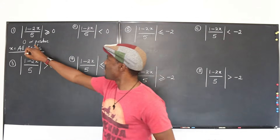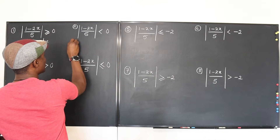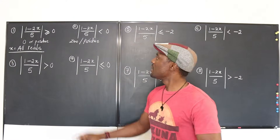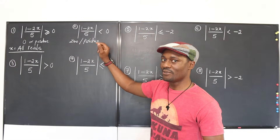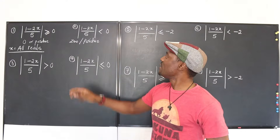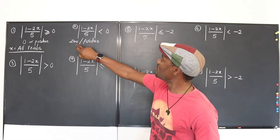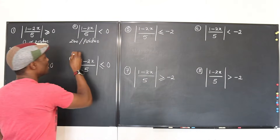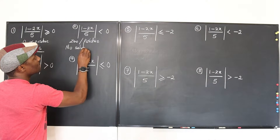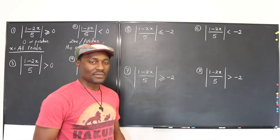Number two: the absolute value of (1 minus 2x) over 5 is less than zero. Remember, what comes out of absolute value is either zero or positive. Can zero be less than zero? No. Can a positive number be less than zero? No. So it doesn't matter what number you pick — you will never get a solution. The solution here is no solution, which we can write as an empty set.